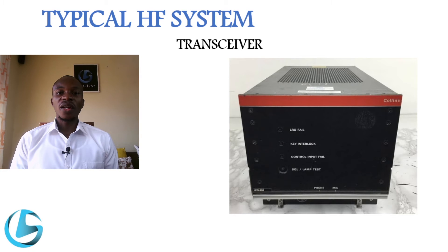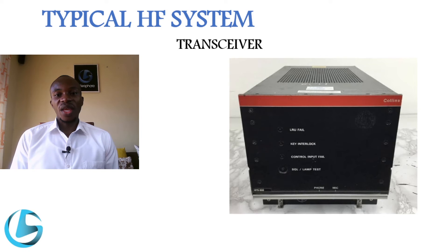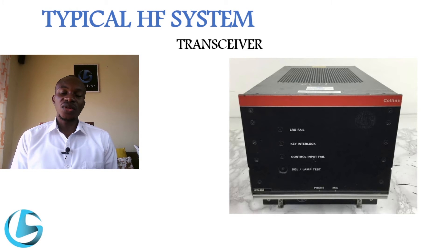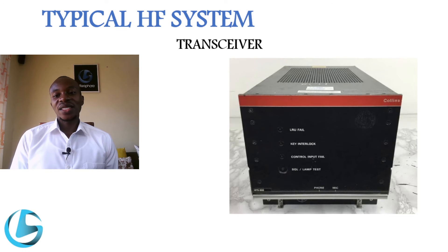The transceiver is found in an electronic bay or an avionics compartment on most aircraft. It processes all signals received from the antenna, as well as signals from the aircraft system — in particular from the microphones or the audio integrating system. It encodes these signals for transmission. It also receives signals from the antenna and transfers them to the audio integrating system, acting as a receiver when the push-to-talk button is not depressed, and as a transmitter when the push-to-talk switch is depressed.